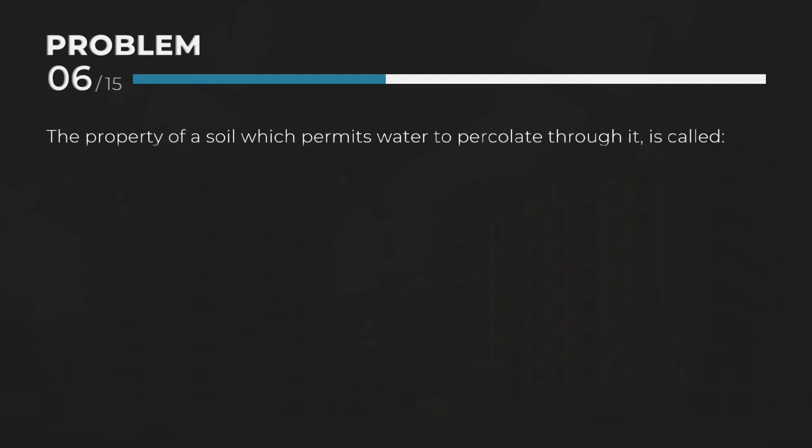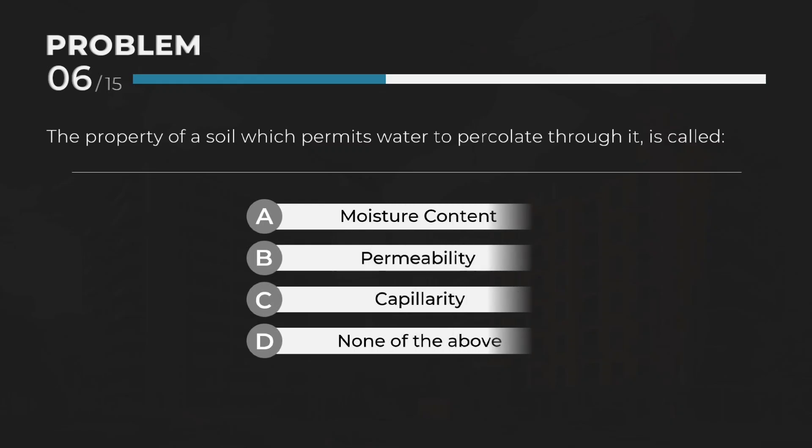The property of a soil which permits water to percolate through it is called — Answer: B. Permeability.